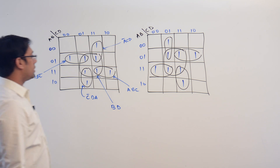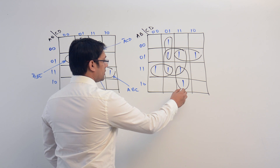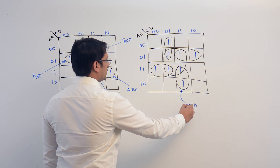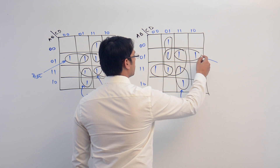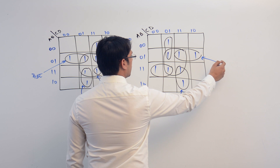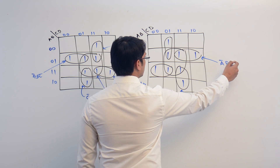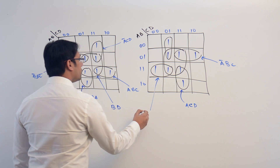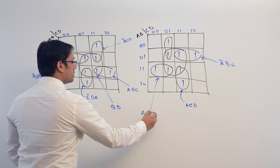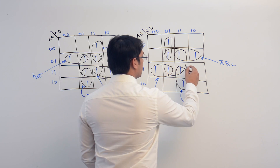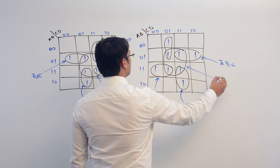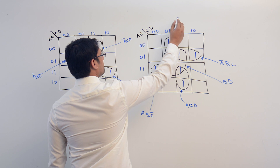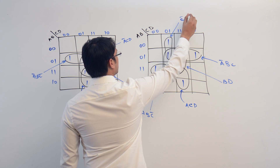In the same way, this subcube is representing C, D, A. This is representing A complement, B, C. This is representing A, B, C complement. This biggest one is representing B, D. This one is representing C complement, D, A complement.